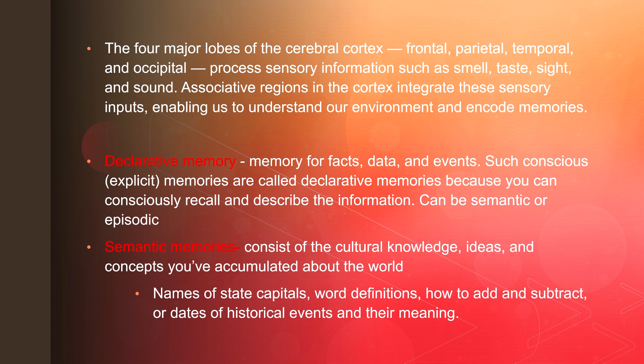There are two different types of memories: declarative memory and semantic memory. Declarative memory is like data — it's analytical, it's facts, specific events, things that are explicitly there. This can be semantic or episodic. Semantic memory is cultural knowledge and ideas — more abstract things accumulated over time that aren't necessarily numbers. Examples include the names of state capitals, names of important people, and definitions of words.